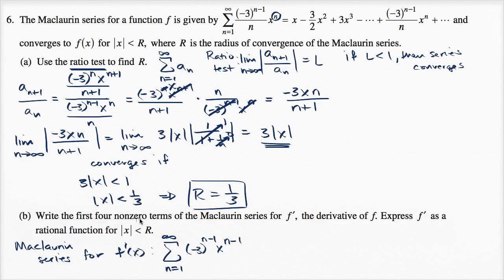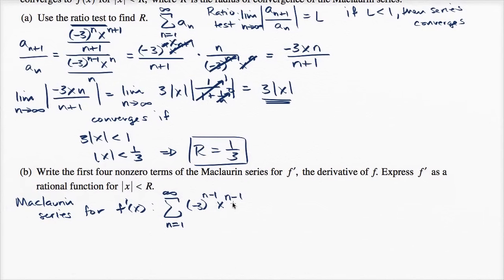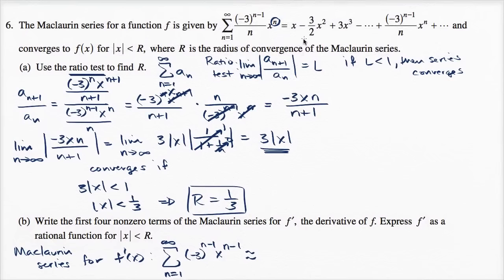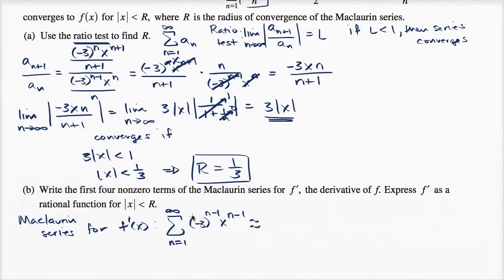They want us to write the first four non-zero terms of the Maclaurin series, so that is going to be approximately equal to — I'll write approximately equal to because we're only going to write the first four terms of this infinite series. I looked at this exponent n, multiplied by the coefficient which had an n in the denominator, so that n and this n cancel out, leaving negative three to the n minus one, and then I decrement that exponent. That's straight out of the power rule.